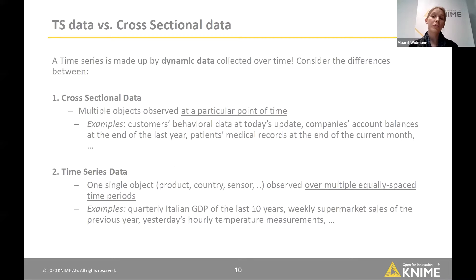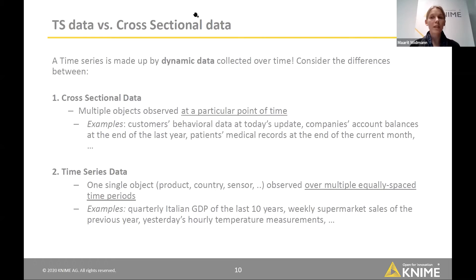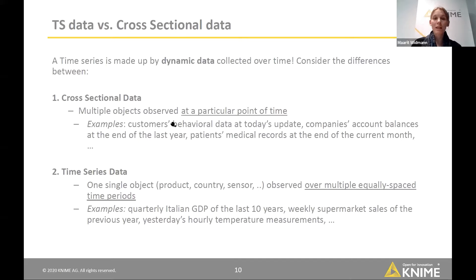Time series data is collected over time — the same object observed at multiple time points: many days, many years, or every second over one minute. This is different from cross-sectional data, which is just a snapshot of the situation — a measurement for one particular point in time. For example, a local supermarket on one day: how many customers, what was the most popular product, what was the average basket size.